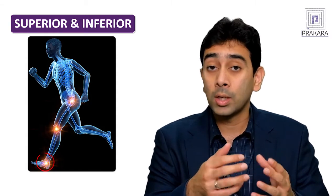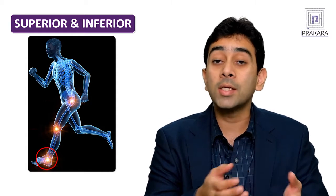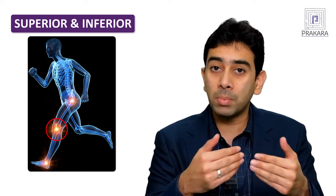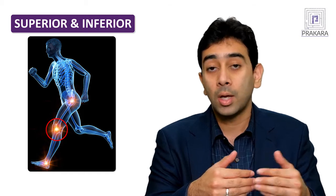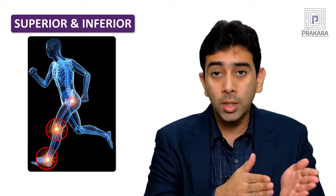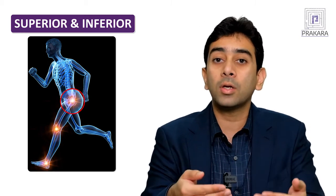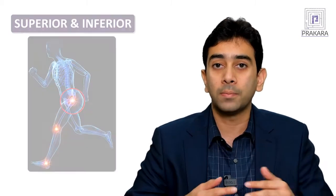For example, the ankle joint is inferior to the knee joint, meaning it is below the knee joint. But at the same time, both the ankle joint and the knee joint are both inferior to the hip joint.